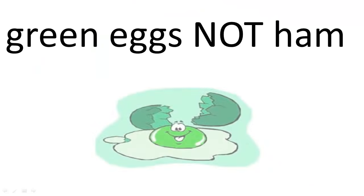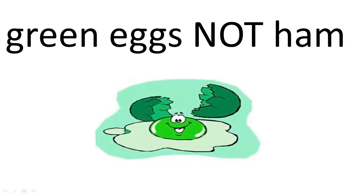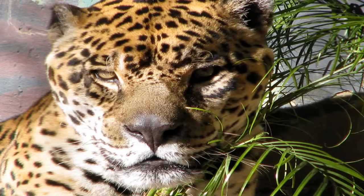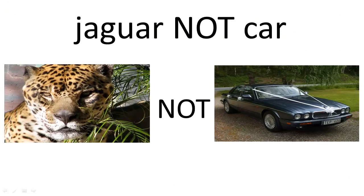Green eggs NOT ham will give you just green eggs. NOT is useful for narrowing down your search when you absolutely don't want to get results that include specific concepts. For example, perhaps you're researching Jaguars and don't want to get results about the car — NOT would be very useful there.